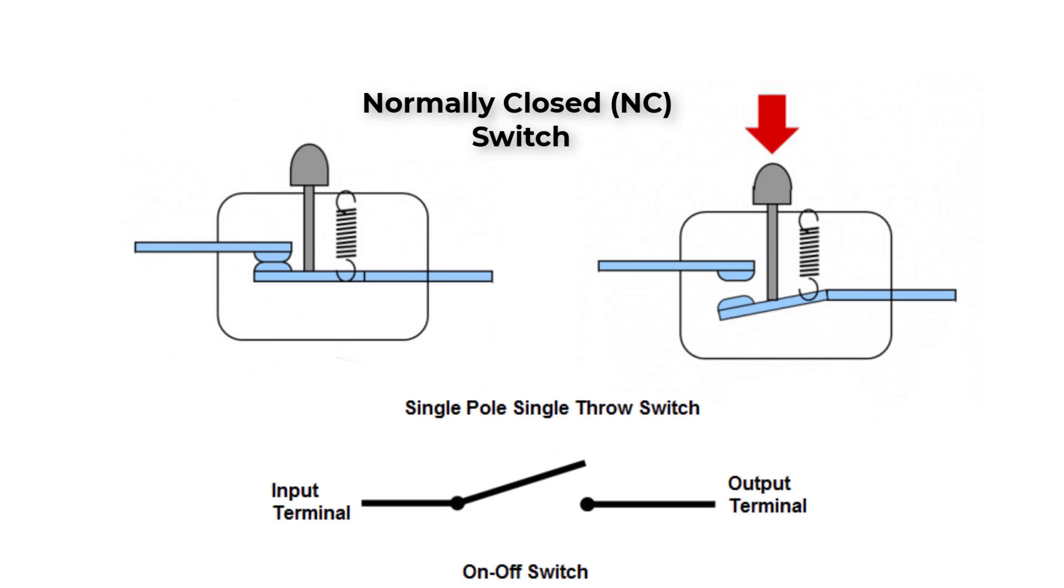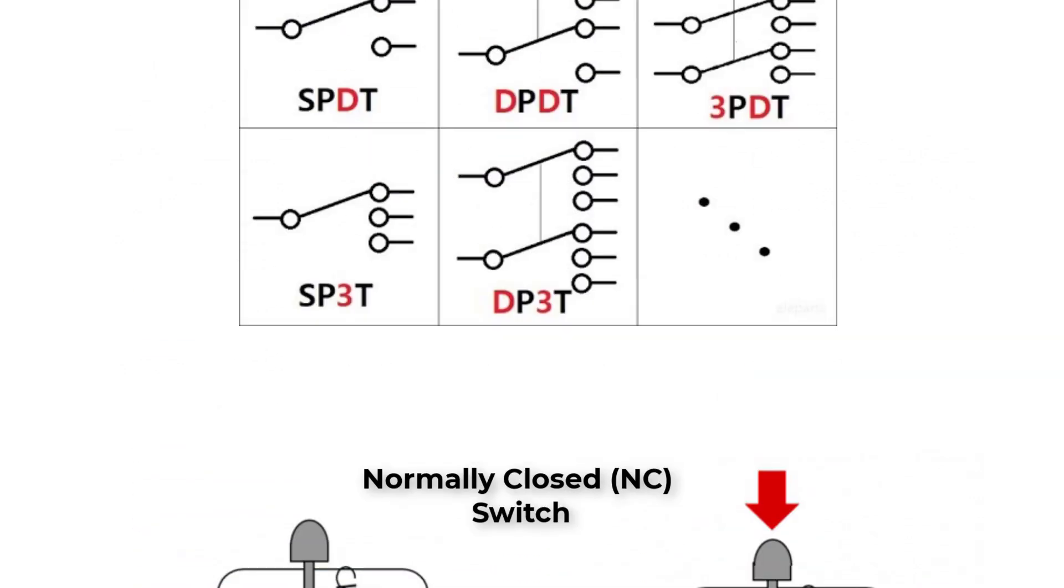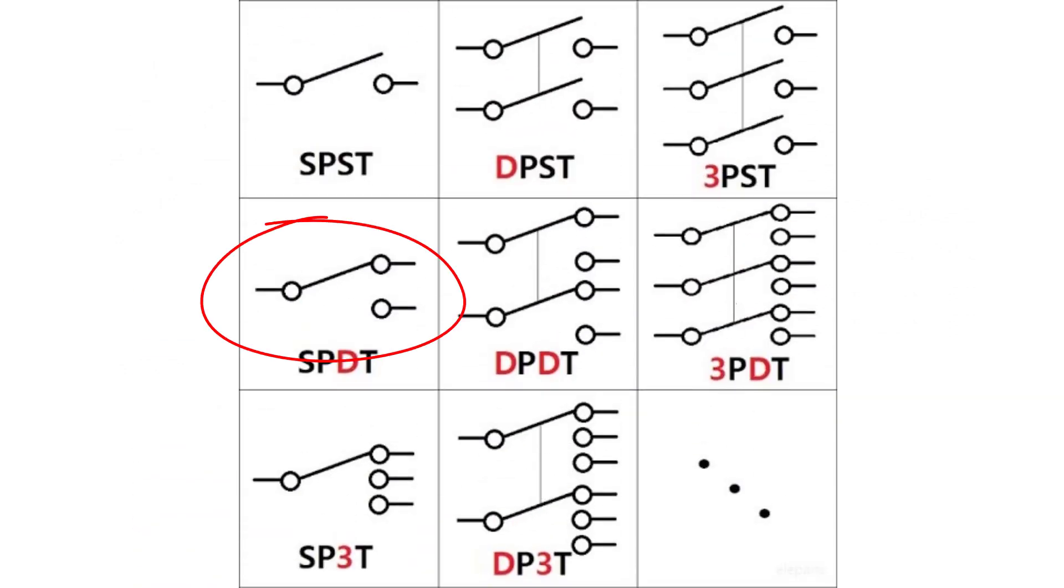This contact here is single pole, single throw, which have one input and one output. Other switches could be single pole, double throw, which have one input and two outputs.